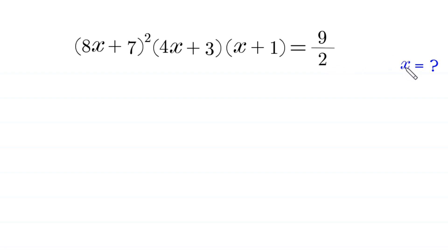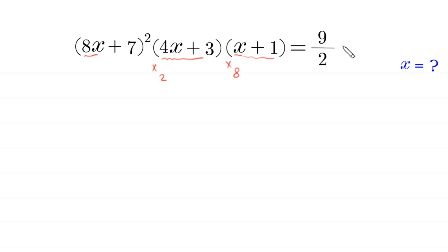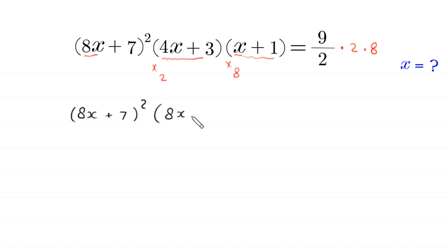Since the first expression has 8x, to make 4x match 8x we multiply (4x+3) by 2, and to make x match 8x we multiply (x+1) by 8. Because we multiplied by 2 times 8 on the left side, on the right side we also multiply by 2 times 8. This gives (8x+7)² times (8x+6) times (8x+8) equals...